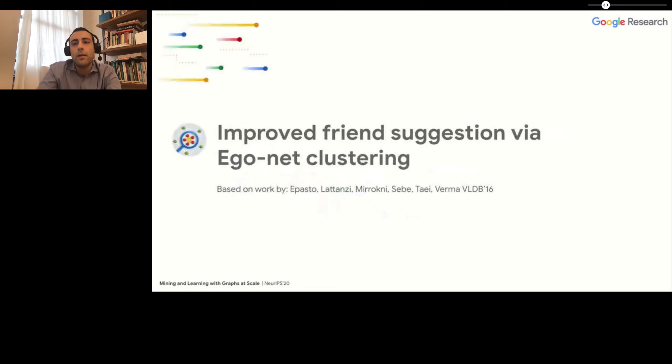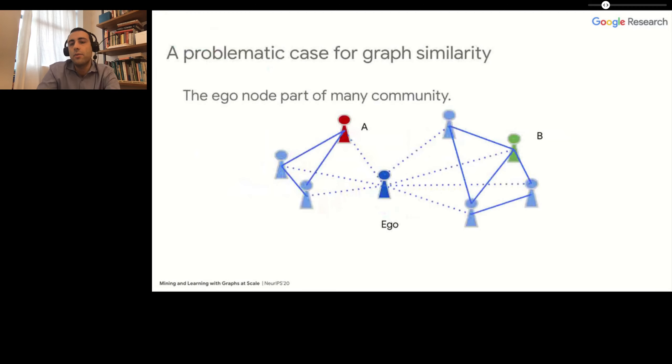Now I'm going to talk about how to use similarity ranking to improve friend suggestions or recommendations in a social network. This is a paper that we published in WSDM in 2016 with other Googlers. As I said before, one simple way of defining similarity is to look at the direct connections of users in a graph. One simple way is to look at the number of common neighbors.